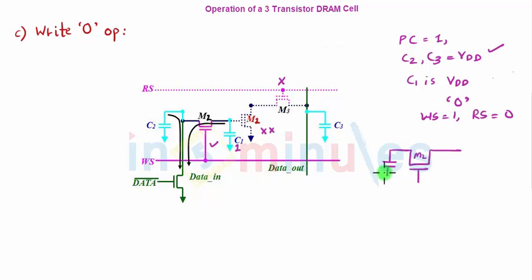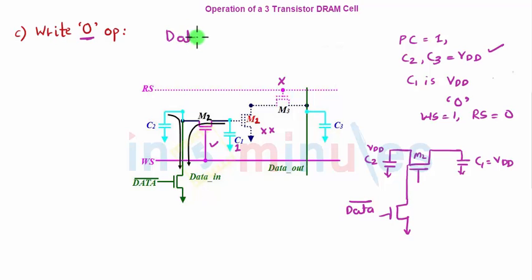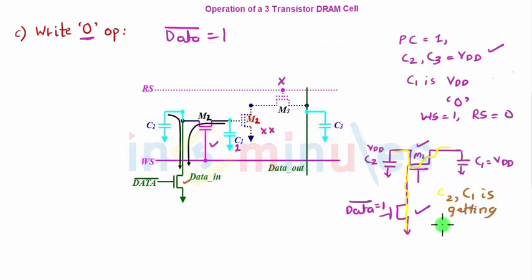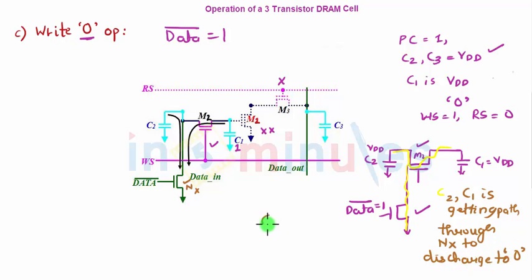C2 is equal to VDD and C1 is also at VDD, but this terminal is connected to the data bar transistor. Because we want to write a 0, data bar equals 1, turning on that NMOS. Now C2 and C1 both get a path through M2 and transistor NX to discharge to 0. So C1 discharges to 0 — I have written a 0 at C1, which was exactly the goal.